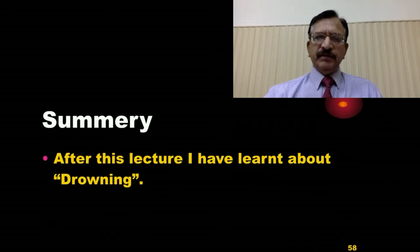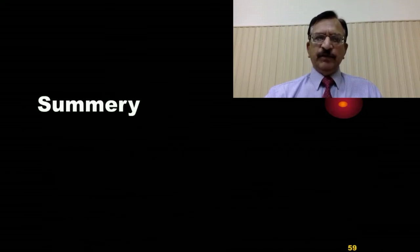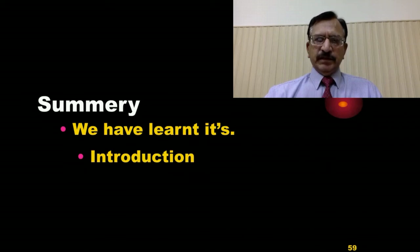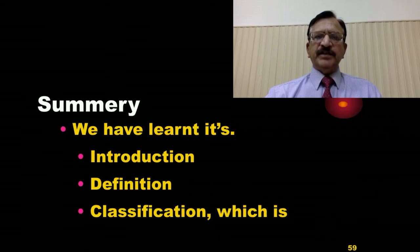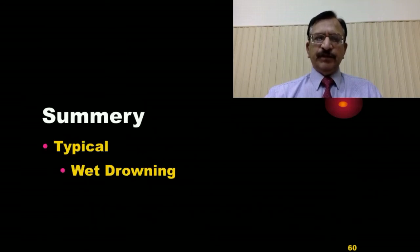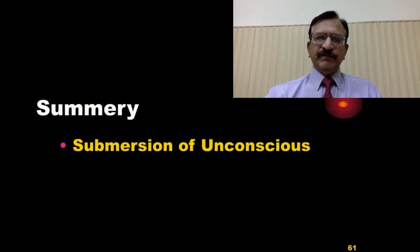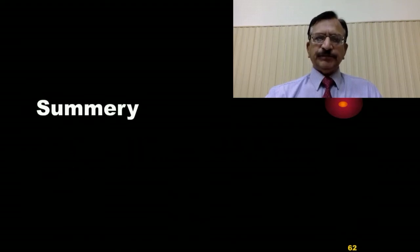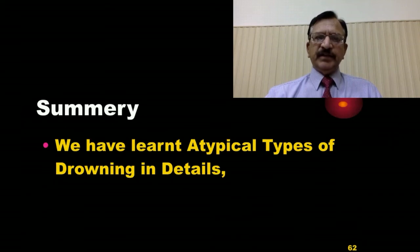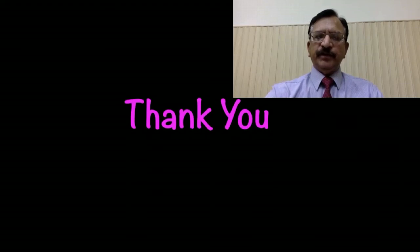In summary, in this lecture we have learned about drowning — its introduction, definition, and classification. The most important classification is typical drowning, called wet drowning, and atypical drowning, which is of four types: dry drowning, immersion syndrome, submersion of the unconscious, and near drowning. We have now learned all the atypical types of drowning in detail. Thank you very much. This is all about lecture number 13. We will be discussing lecture number 14, continuing with the topic of drowning. Take care.